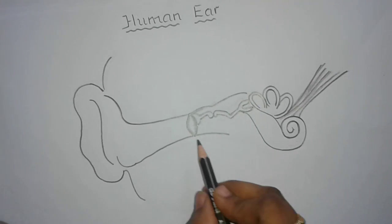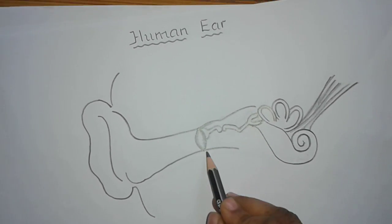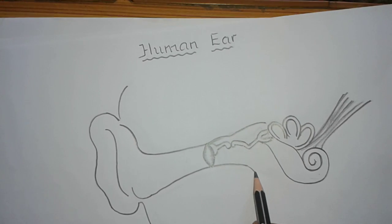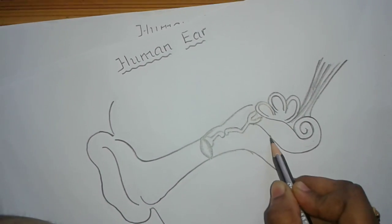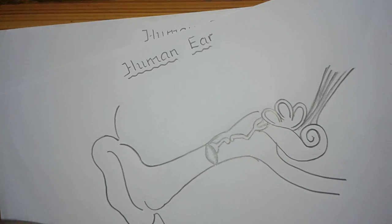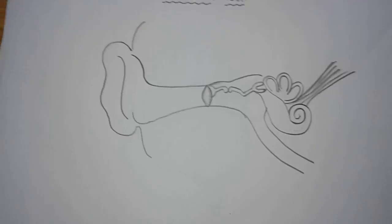Now children, to maintain the air pressure on either side of the tympanum there is a tube called the eustachian tube. So draw the eustachian tube. So this is the structure of the ear.